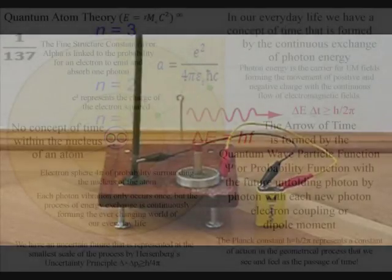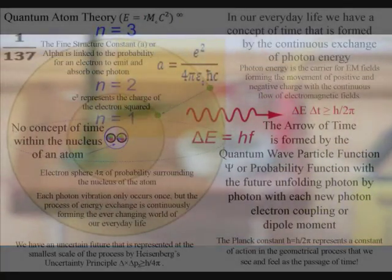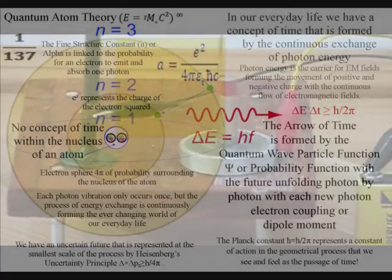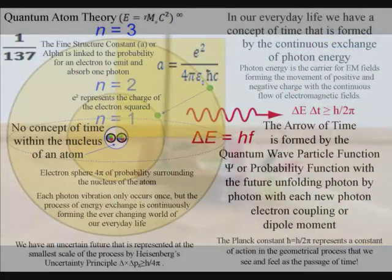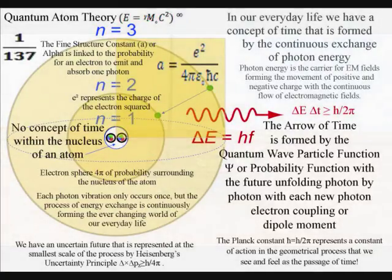In my next video I will explain how this could be possible if photon energy represented an emergent process with everything within that process being quantized — not just the energy, but also the inertia and mass would have to be coming into existence quanta by quanta. Thanks for watching; please subscribe and share, it will help the promotion of this theory.